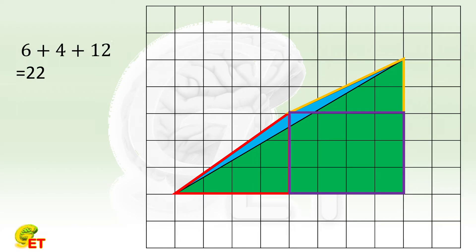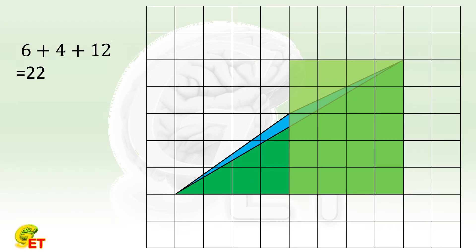Now we need to subtract the green triangle. By using the same method, we get its area is twenty. So the area of the blue shadow is two.